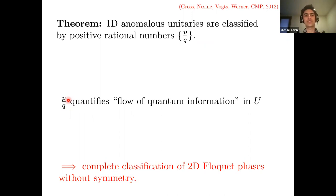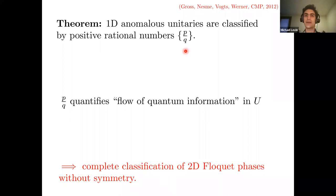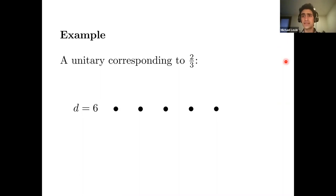What does this rational number p/q mean physically? Roughly speaking, it describes some kind of flow — in the case of a translation there's a notion of something being transported. This gives a complete classification of 2D many-body Floquet phases without symmetry, labeled by positive rational numbers, which is a strikingly rich and structured answer.